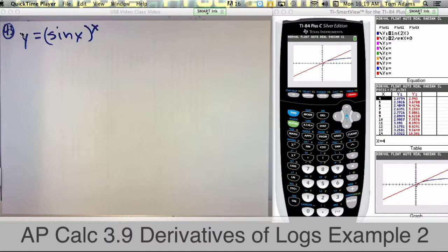If I treat it as an exponential, we say u to the x, where sine of x is u. Then we take the derivative of u, which would be cosine of x, and then we plug it into the formula. That's one way to get the answer.